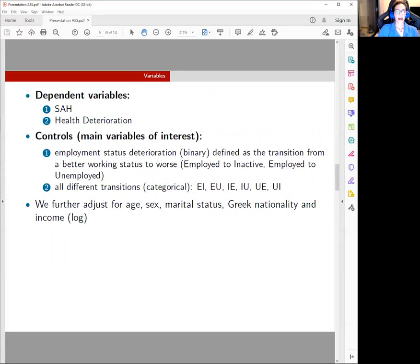This analysis uses as dependent variables measures for health. The first one is self-assessed health and the second one is health deterioration. Self-assessed health takes values from one to five, five indicating poor health, and health deterioration is a binary variable based on self-assessed health defined as a transition from a better health status towards worse health.